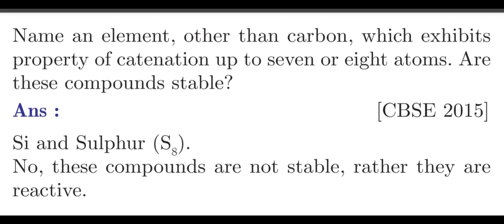Question number 4. Name an element other than carbon which exhibits the property of catenation up to 7 or 8 atoms. Question number 5. Are these compounds stable? Answer: silicon and sulfur. These compounds are not stable; rather, they are very reactive.